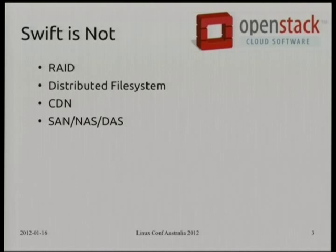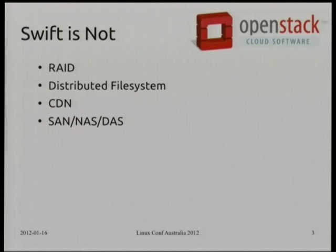Most importantly, to start off with: Swift turns out it's not RAID. It's not a distributed file system. You can't mount it on your computer. It is not a CDN — in fact, on its roadmap to-do list is CDN integration, but that's to interface sensibly with CDNs, not to be a CDN. It is also not a SAN or a NAS or anything of that nature. It is not block storage in any way, shape, or form.